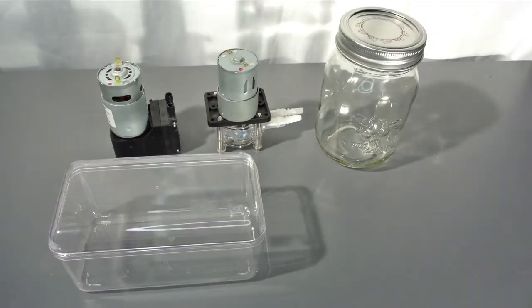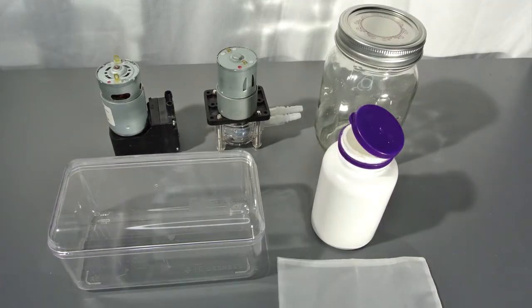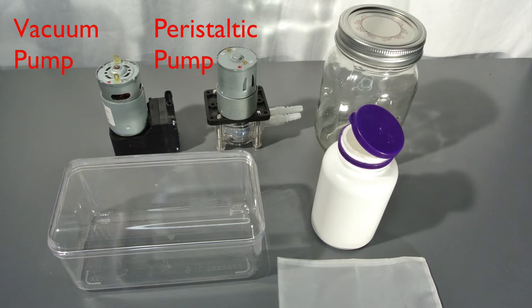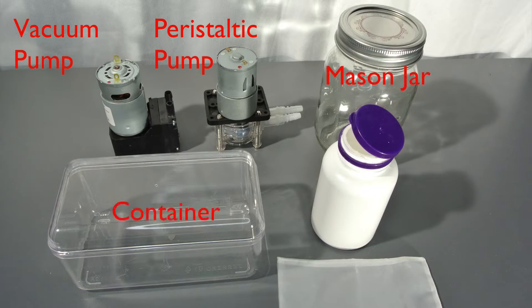Here are the parts you need for this project: a vacuum pump, a fluid pump (I highly recommend using a peristaltic pump because it will not touch the fluid directly), a mason jar, a container for your pumps, a plastic bottle, and a filter.